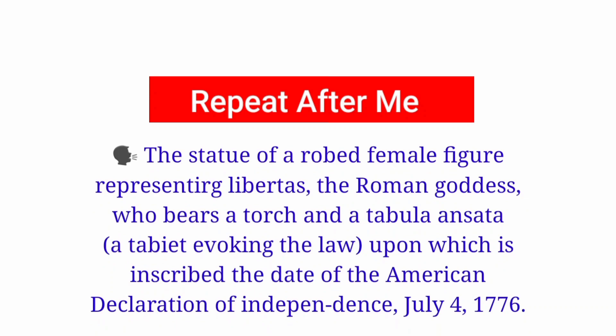The statue of the robed female figure represents Libertas, the Roman goddess, who bears a torch and a tabula ansata, a tablet evoking the law, upon which is inscribed the date of the American Declaration of Independence, July 4, 1776. The statue of the robed female figure represents Libertas, the Roman goddess, who bears a torch and a tabula ansata, a tablet evoking the law, upon which is inscribed the date of the American Declaration of Independence, July 4, 1776.